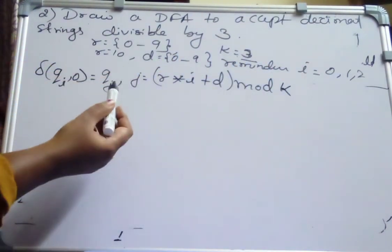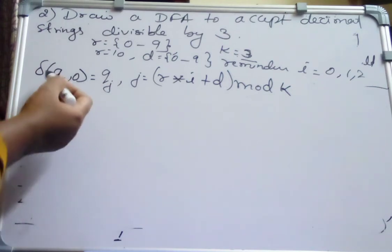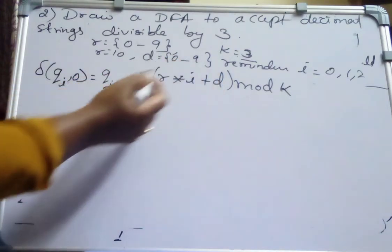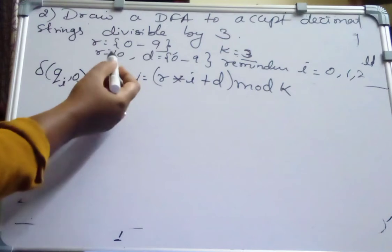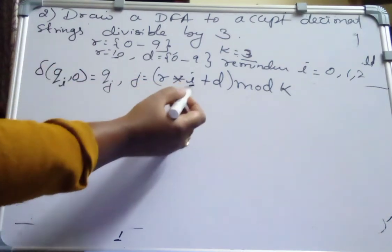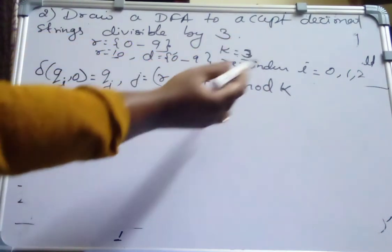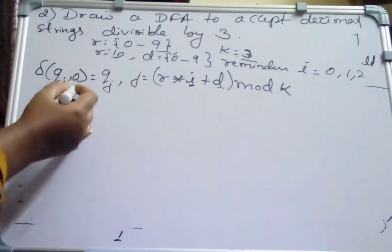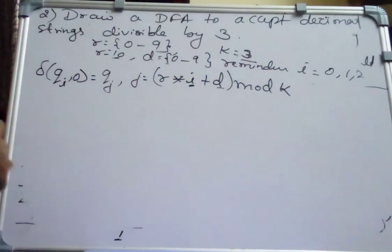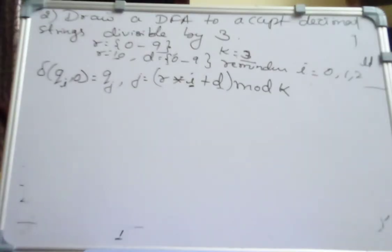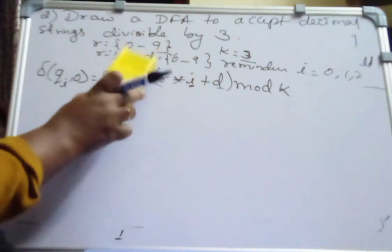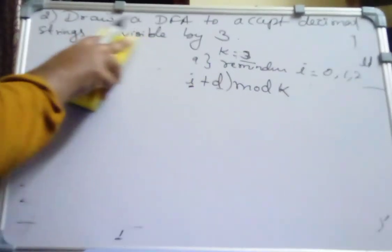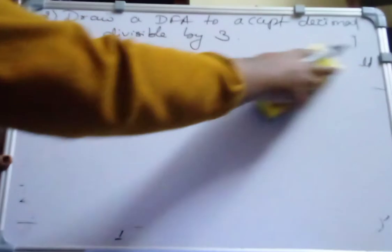If we go with the formula method, what we should do? For each input symbol, taking the reminder I as 0, 1, 2 and changing the digits from 0 to 9, I should find what is QJ by substituting in this formula where R value is 10, and I value keeps on changing. I may take 0, then 1, then 2, and this D will be taking 0 to 9 inputs. So the complexity of the problem increases. It becomes very big. So instead of going like this, one shortcut method to solve this problem is.